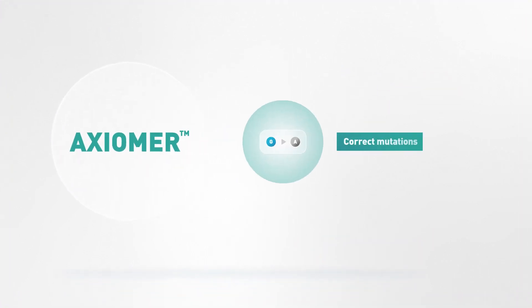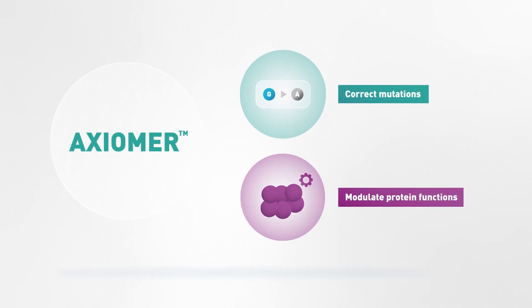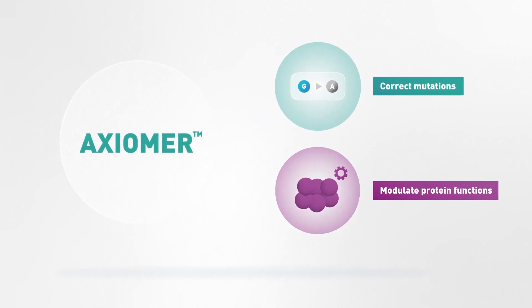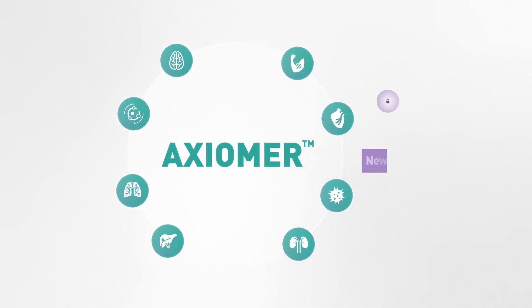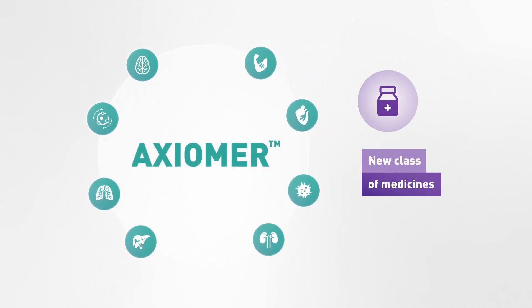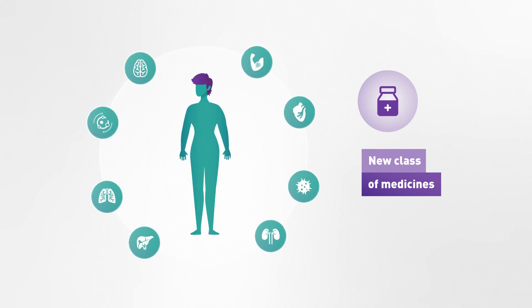With its ability to correct G to A mutations and modulate protein functions, Axiomer is a powerful technology that ProQR is advancing. It holds the prospect of forging a new class of medicines with broad therapeutic potential.